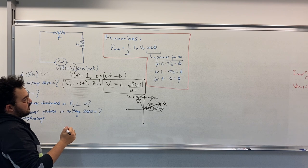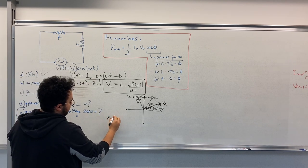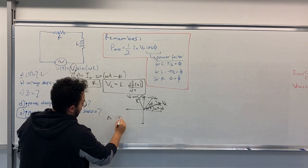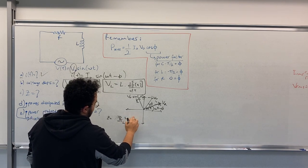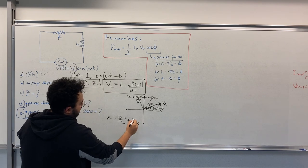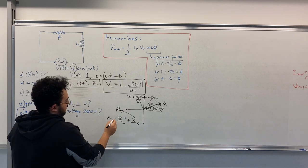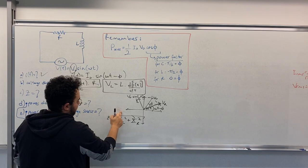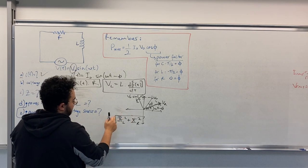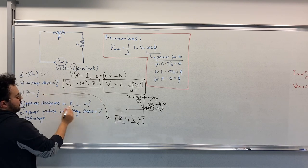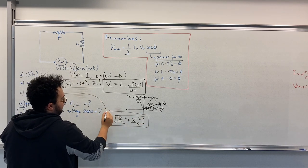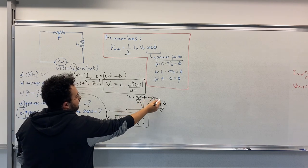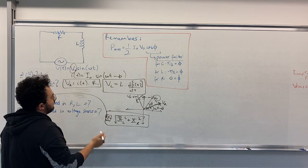Now, in order to calculate Z, we had the formula Z equals square root of XL squared plus R squared. This is the impedance that we are asked to find. If you want to calculate I0, you just divide V0 with this impedance, so you will find I0.